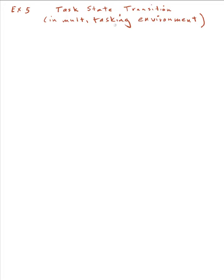If I have several tasks in this multitasking environment, each task is going to be in a state described by this state transition diagram. A task will enter the system here and the initial state is the ready state. This is a simplified state transition diagram for tasks, but it's good enough to get the feel for what's going on in a multitasking environment. When the operating system is allowed to give the CPU to a particular task, it will choose a task that is in the ready state. There may be several tasks in the ready state; the operating system will pick one, and the state of that task will transition from ready to running.